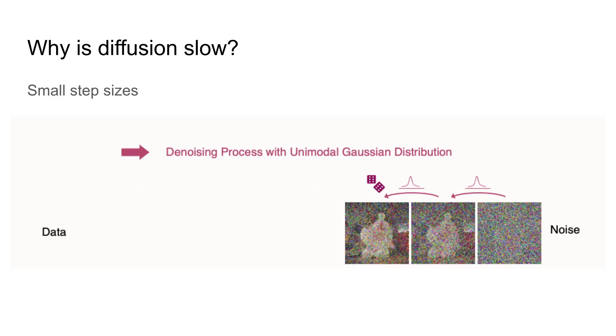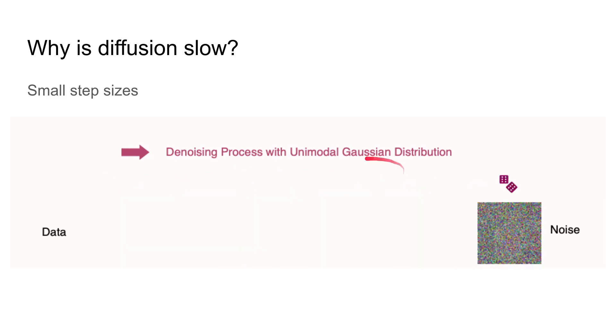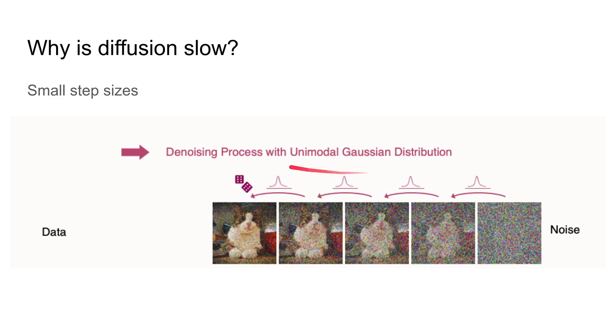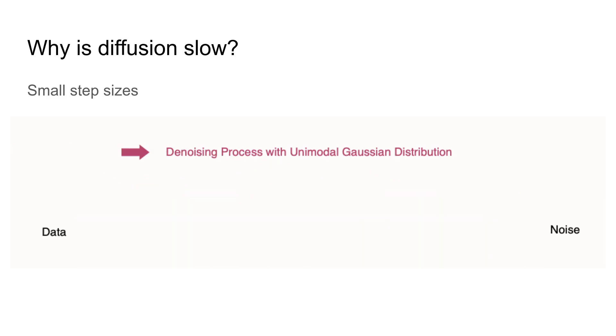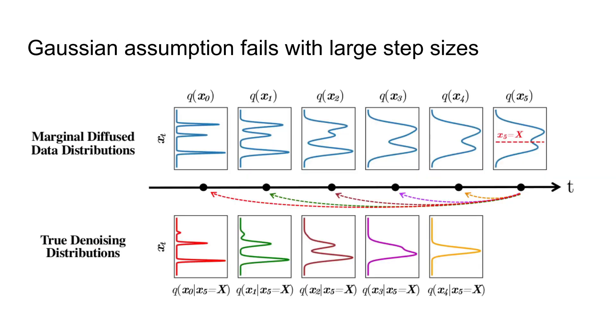But why do we have to go back one step at a time? Why cannot we go from the noise to the image at once? Well that's because we make the assumption that the denoising distribution is a unimodal gaussian distribution, and this assumption only holds if the step size is sufficiently small.